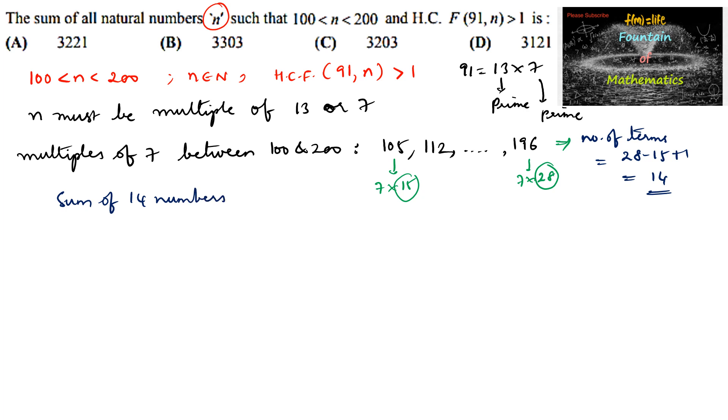Number of numbers between 100 and 200 which are multiples of 7. By using the formula, Sn is equal to n by 2 times first term plus last term. So 14 upon 2 times first term is 105 and the last term is 196.